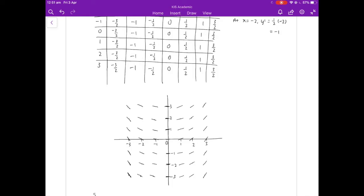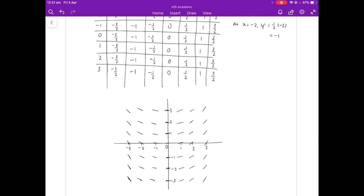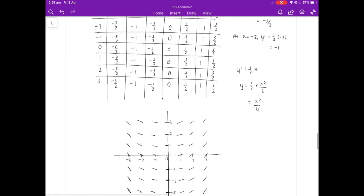If they ask you to do more points, you can do more x and y values, and that will give you a better idea of the slope field. But as you can see from this, it looks like all of the possible solutions to the differential equation would be parabolas, concave up parabolas specifically. And that makes sense because if you integrate y dash equals half x, you actually get y equals half times x squared over 2, which is x squared over 4, which is a parabola.